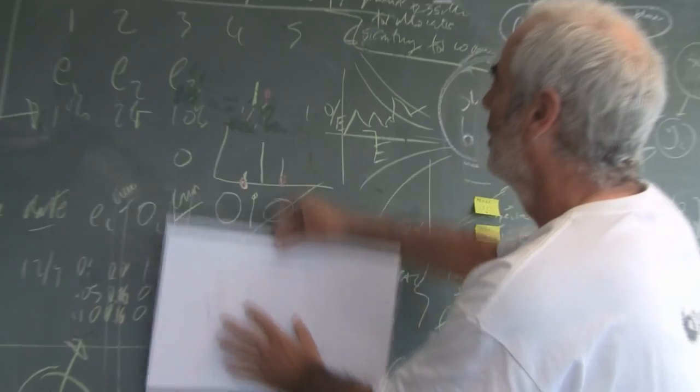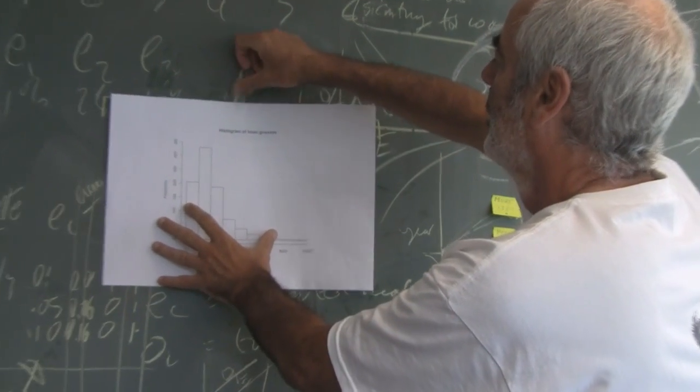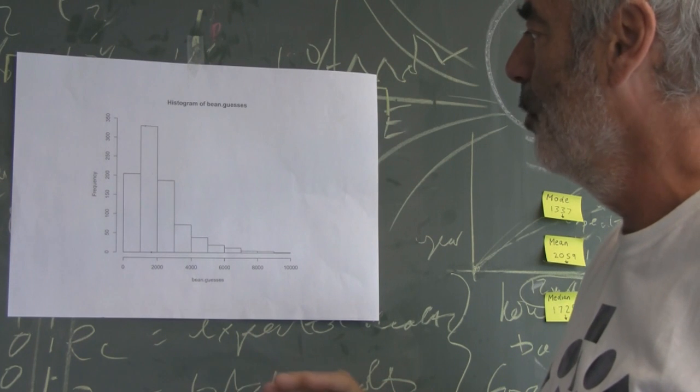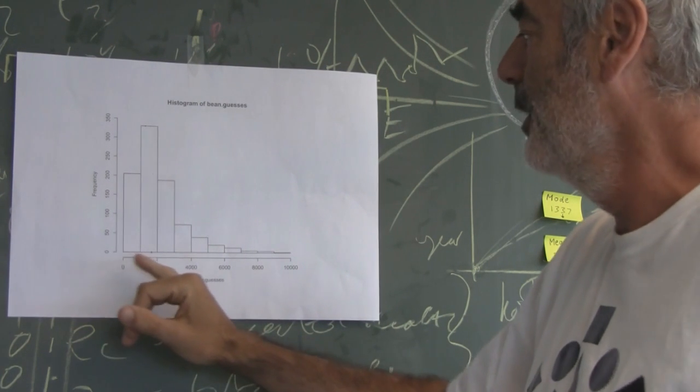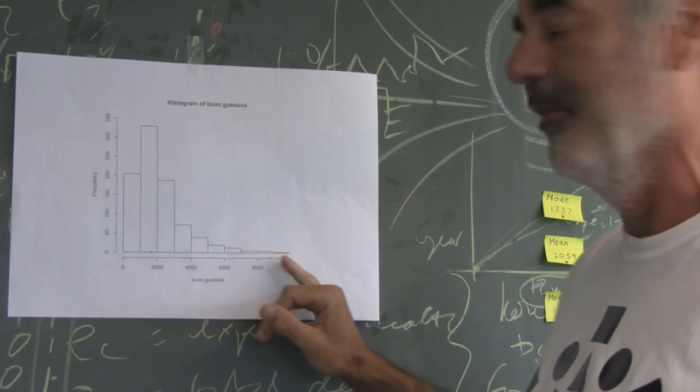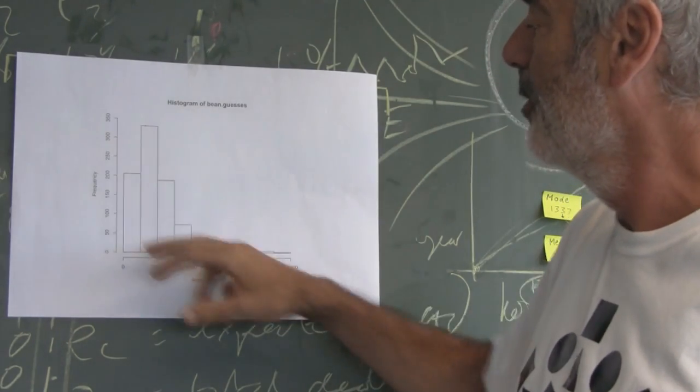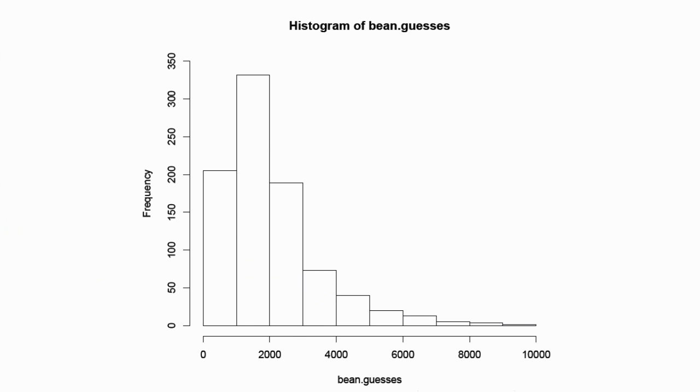Okay. Here is the distribution of the judgments that were made, the guesses that were made. We can see here they range from very low right up to nearly 10,000. Some people thought there were nearly 10,000 jelly beans in that jar. Most of them are around a bit below between 1,000 and 2,000. And we see a peak here, but a long tail with some people thinking 3,000, 4,000, 5,000 jelly beans in the jar. So, we've got a very non-symmetric distribution of judgments here.